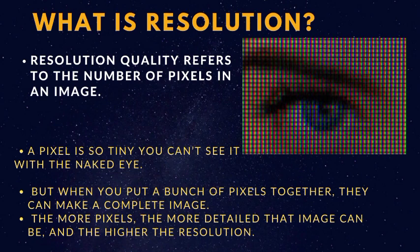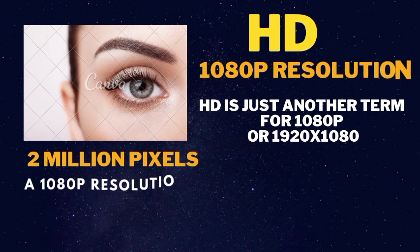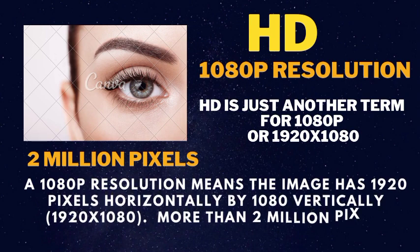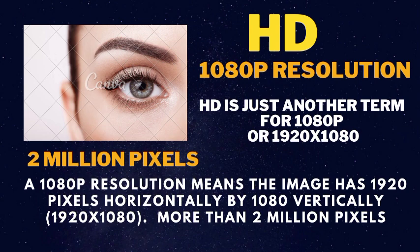Now you see this picture. HD quality 1080p resolution. HD is just another term for 1080p, or 1920 by 1080p. 1080p resolution means that the image has 1920 pixels horizontally by 1080 pixels vertically. So if we multiply this number, you will get more than 2 million pixels. So this HD, normally whatever is available in the market, HD quality is 2 million pixels.